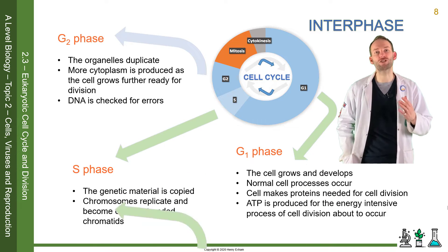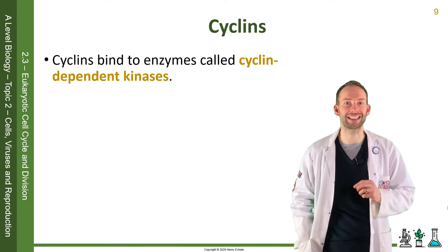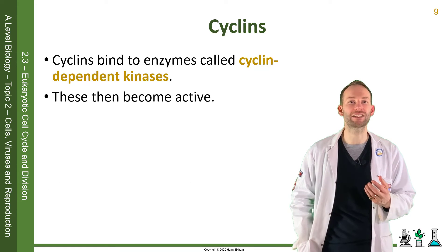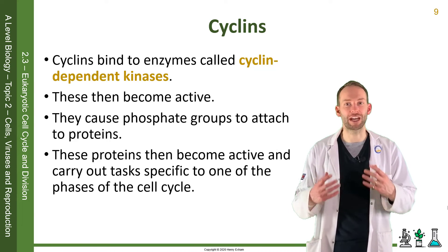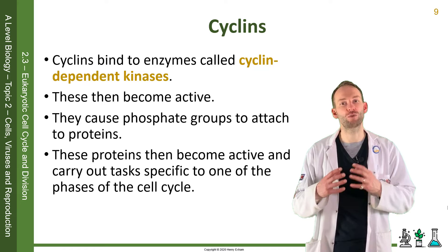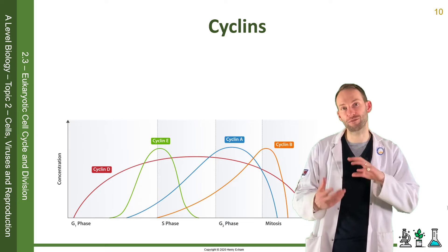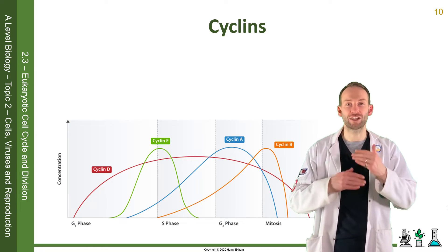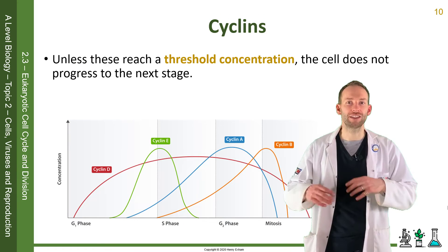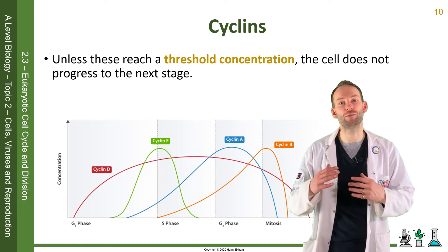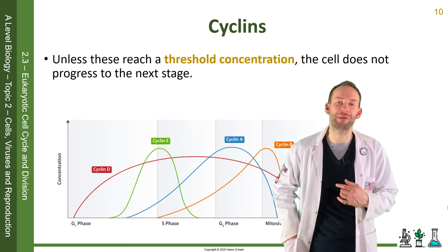Different cyclins control when each stage of the cell cycle occurs. Cyclins bind to enzymes called cyclin-dependent kinases, and these then become active. This activates the enzyme, and they cause a phosphate group to attach to a protein; these proteins then become active and carry out the tasks specific to one of the phases of the cell cycle. By changing levels of cyclins and activating these enzymes and proteins, the cell can move through the different phases of the cell cycle as needed. There are four main cyclins — cyclin D, E, A, and B — which reach different thresholds depending on which phase is happening and which enzymes become activated.